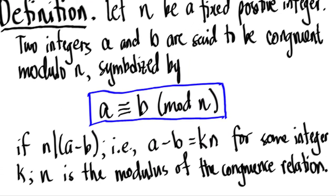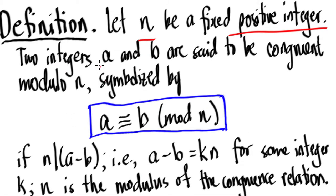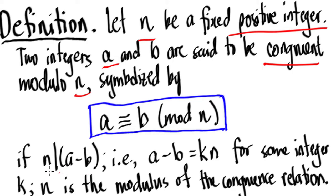Let n be a fixed positive integer. Two integers a and b are said to be congruent modulo n — symbolized as a ≡ b (mod n) — if n divides the difference a minus b. That is, a minus b equals n times some integer k, because n is said to be a factor of a minus b. We call n the modulus of the congruence relation.